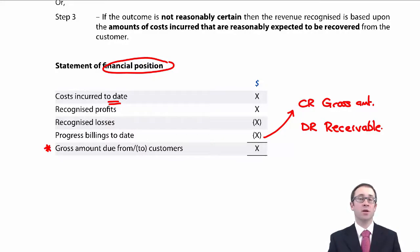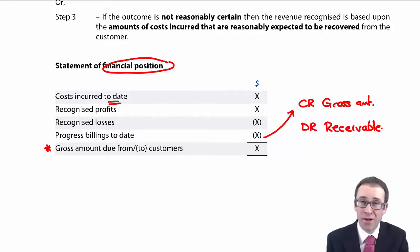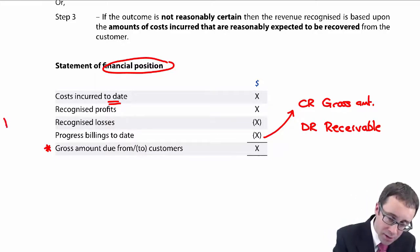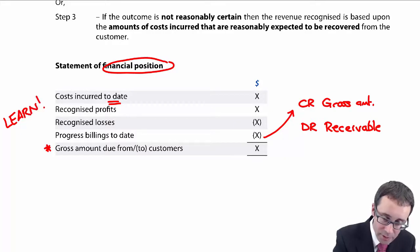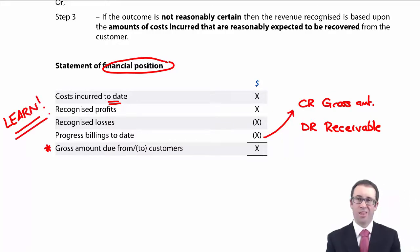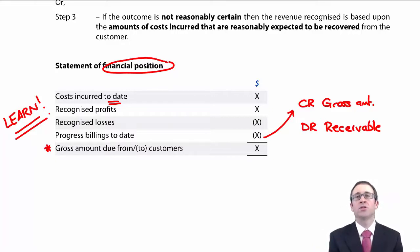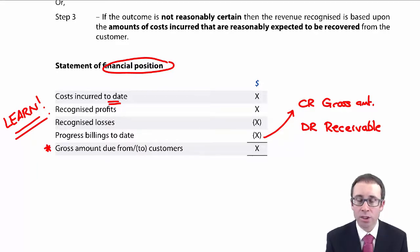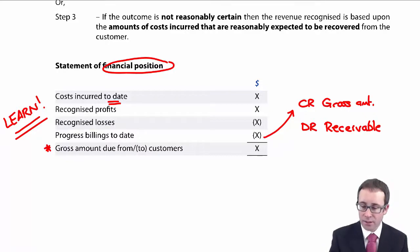And then obviously, if you receive cash from your customer, you debit bank and credit the receivable. That all makes sense, reasonably so, I hope. The key thing is that this is a pro forma — if you have pro formas, learn them. And if you learn the pro forma, the question won't challenge you too much within the real exam. If you don't know the pro forma, you can't answer the question.